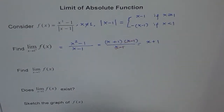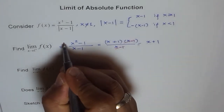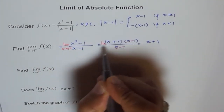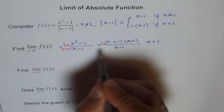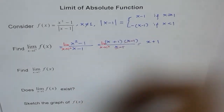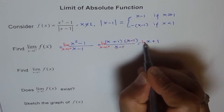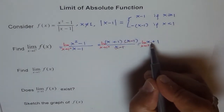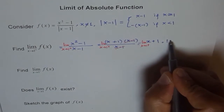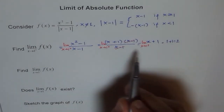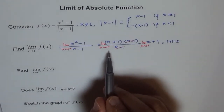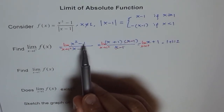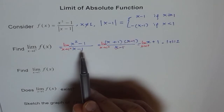Remember, whenever you write this, you should never omit writing 'limit x approaches 1⁺' — that is the question. After simplifying to (x + 1), we can plug in x = 1 and get 1 + 1 = 2. So the right-hand limit is 2. We could not substitute 1 directly into the original function because that gives (1 - 1)/(1 - 1) = 0/0, which is not defined.